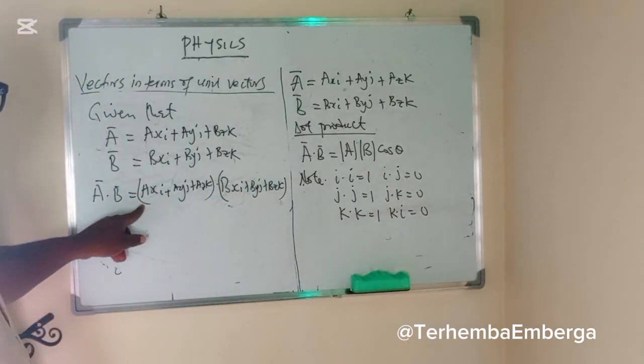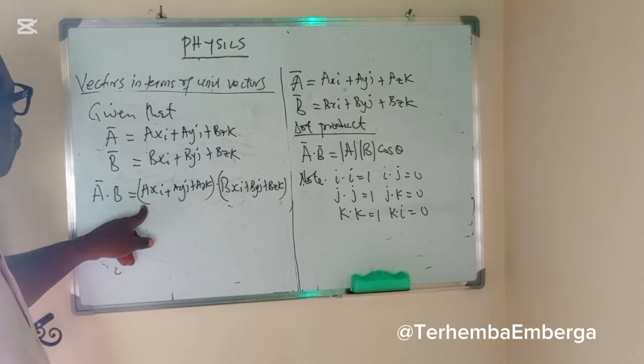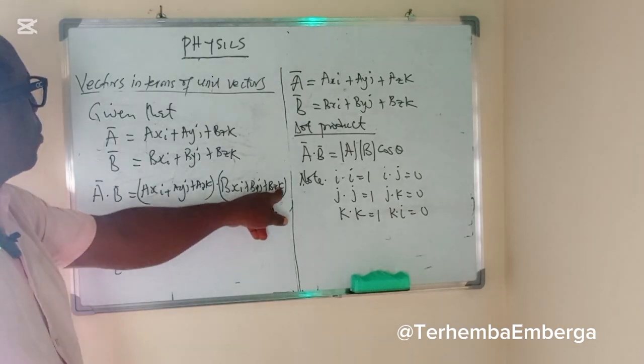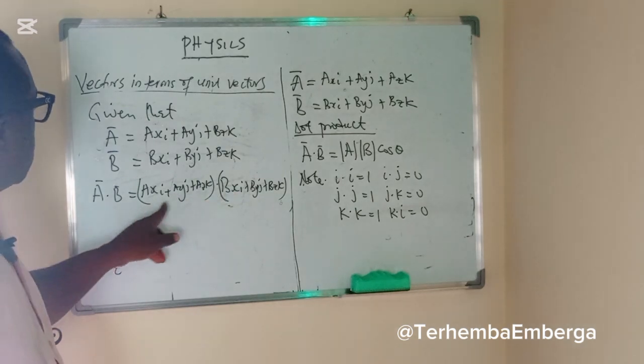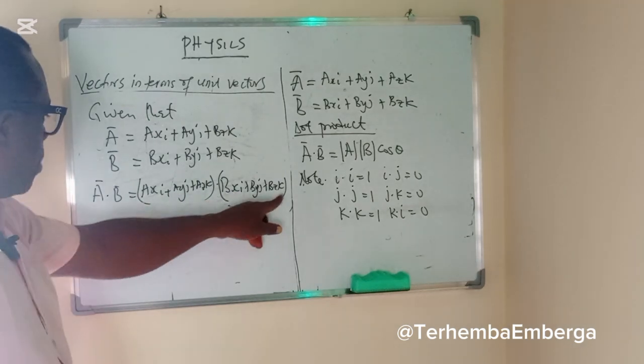If you have a scenario like this, you need to take the first term and multiply out. A multiplied by this, this term multiplied by this, this term multiplied by this.